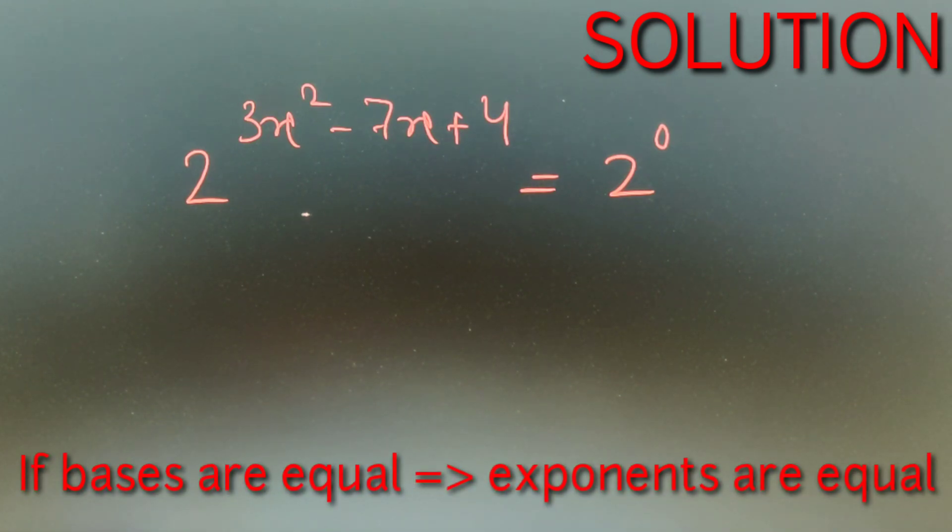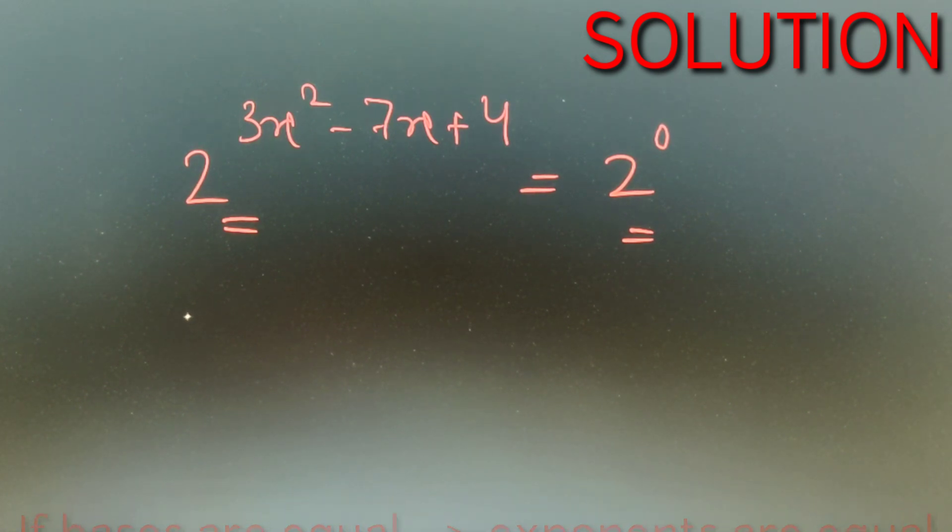So in the question, we are given that 2 to the power 3x square minus 7x plus 4 is equal to 1. Now instead of 1, I can write it down as 2 to the power 0. Now in both LHS and RHS, we have base as 2 and they are equal, so their exponent must also be equal. So I can say that 3x square minus 7x plus 4 is equal to 0.